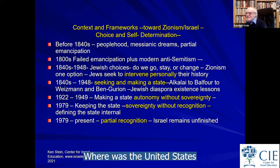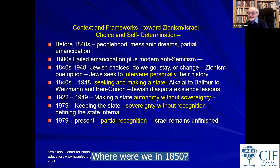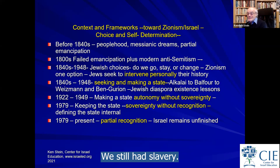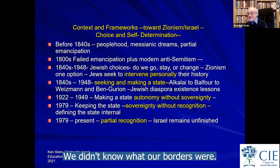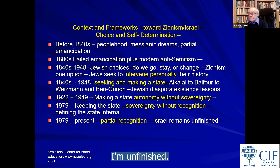Israel as a state is unfinished — it's going to be 75 years old in 2023. Where was the United States when it was 75 years old? Starting from 1776, that puts the US around 1850. Where were we in 1850? We hadn't fought a Civil War yet. Women didn't have the right to vote. We still had slavery. We didn't know what our borders were. I'm asking everyone to be a little patient, because like me, Israel is only 75.